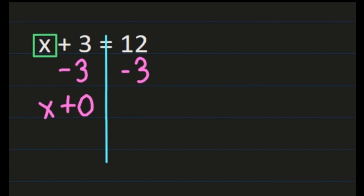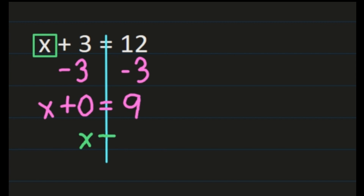Now on the left, I still have x — I haven't done anything to it. 3 minus 3 is 0. And on the right-hand side, I have 12 minus 3, and 12 minus 3 is 9. Our 0 doesn't have a value here — x plus 0 is x. So when we go to simplify this line, we just need x. x on the left side equals 9, and we haven't done anything else to the 9, so x equals 9.